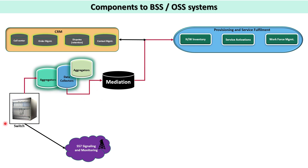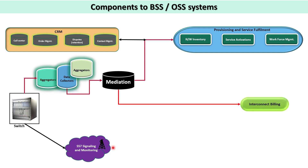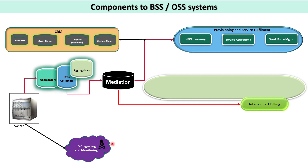This is the high-level function of how CDRs are received into the mediation system from the switch. At the same time, from the switch, there is an SS7 signaling and monitoring mechanism in place. Whenever calls are happening, they get routed through the air interface, SS7 signaling comes into picture, and there is a monitoring mechanism to check the quality of voice or data.